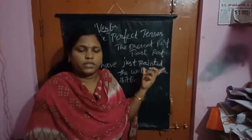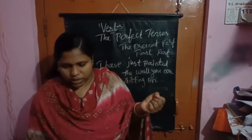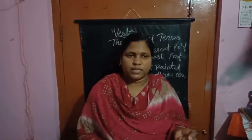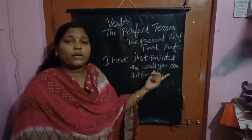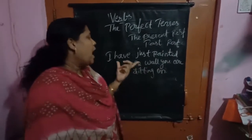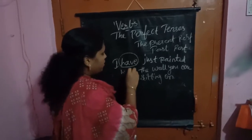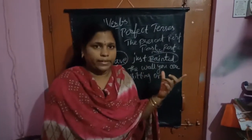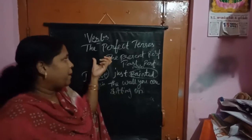What are the perfect tenses? When we are using the helping verbs has and have, then with the past participle form of the verb — when we are using has, have, or had with the main verb — then these are called perfect tenses. Now see here. I have written one example: 'I have just painted the wall you are sitting on.' Here 'have' is the helping verb, and 'painted' is the main verb in past participle form.